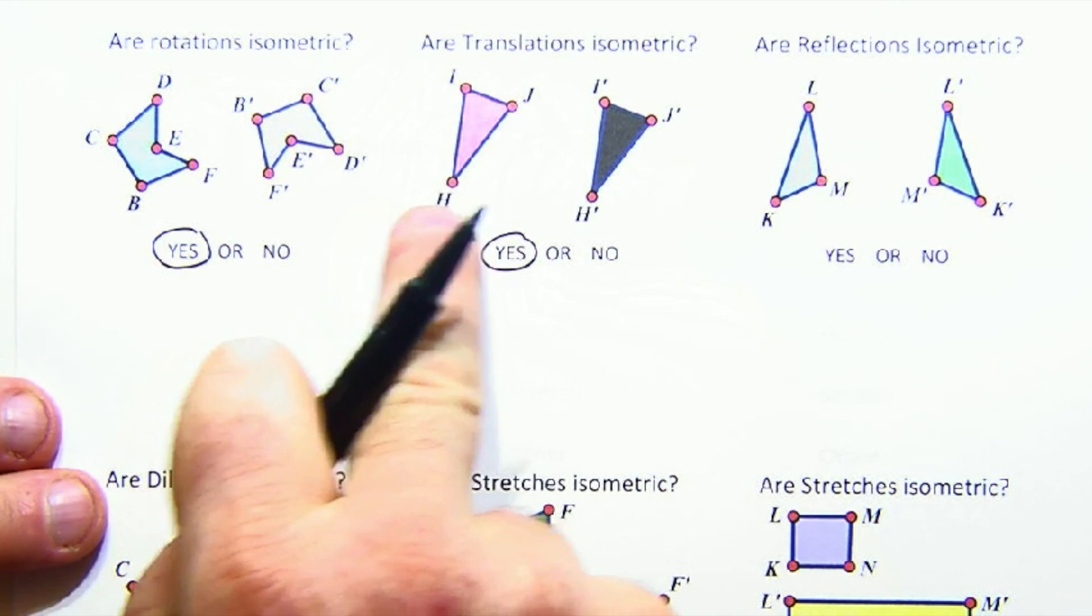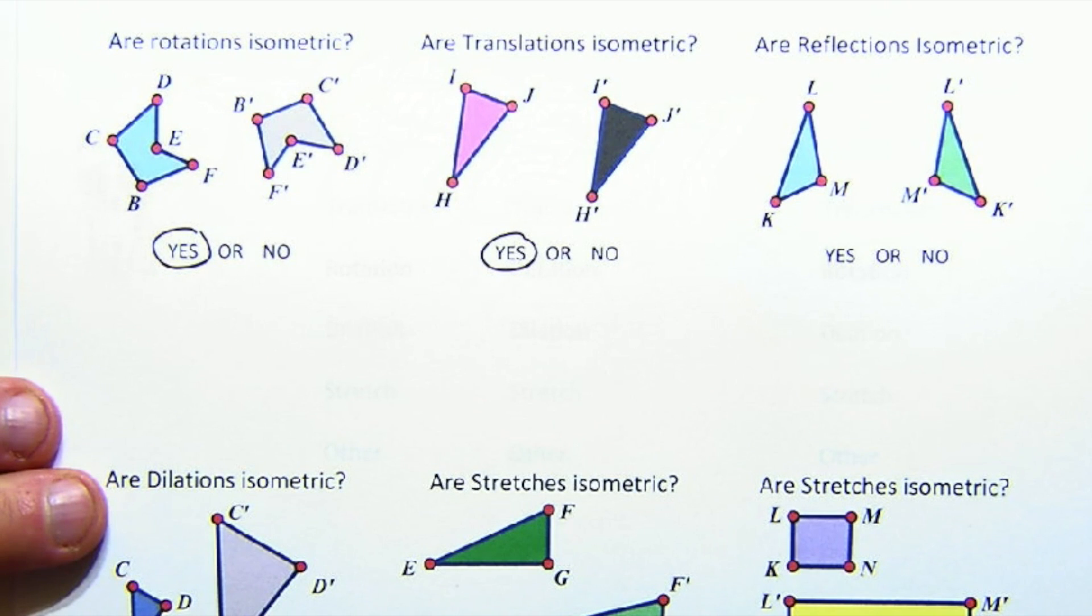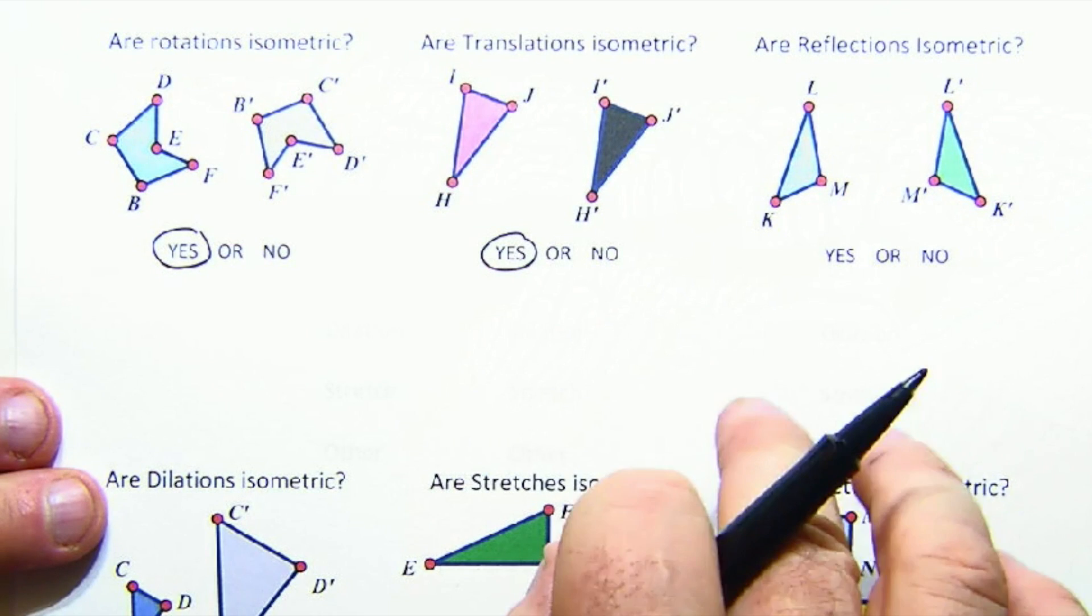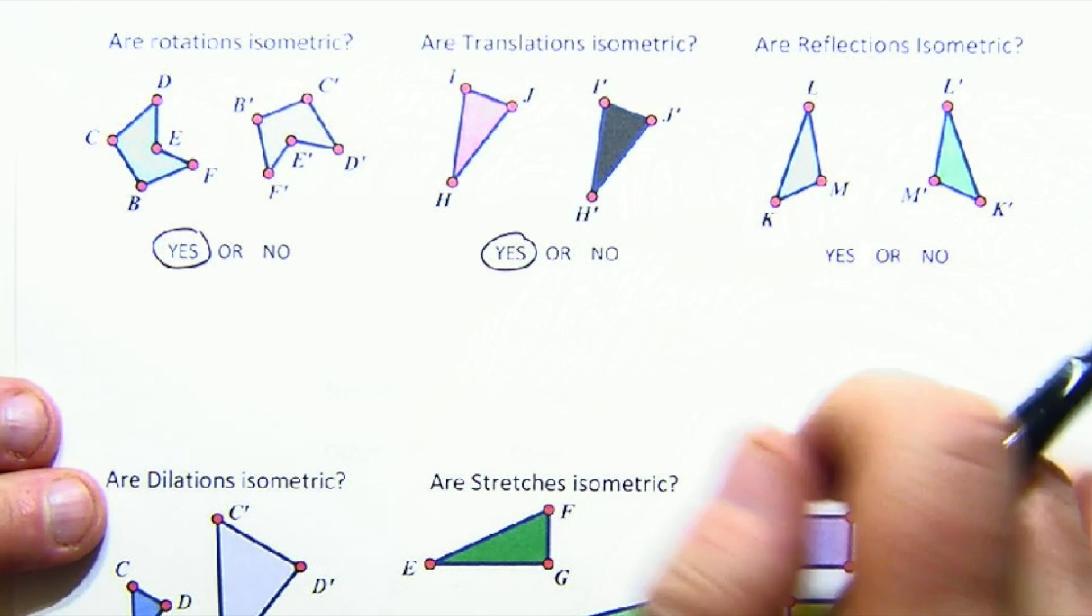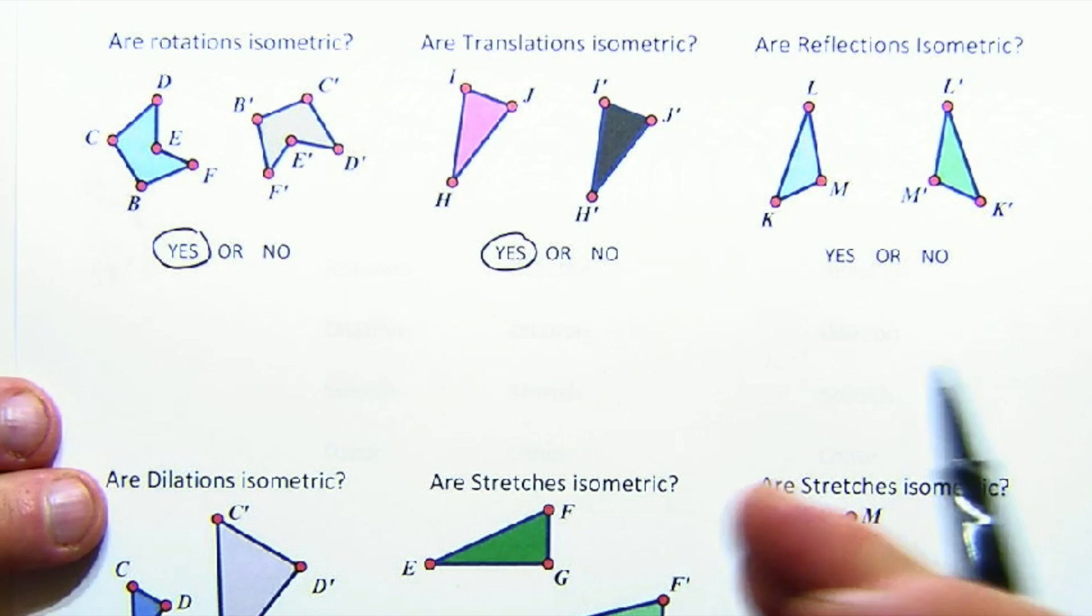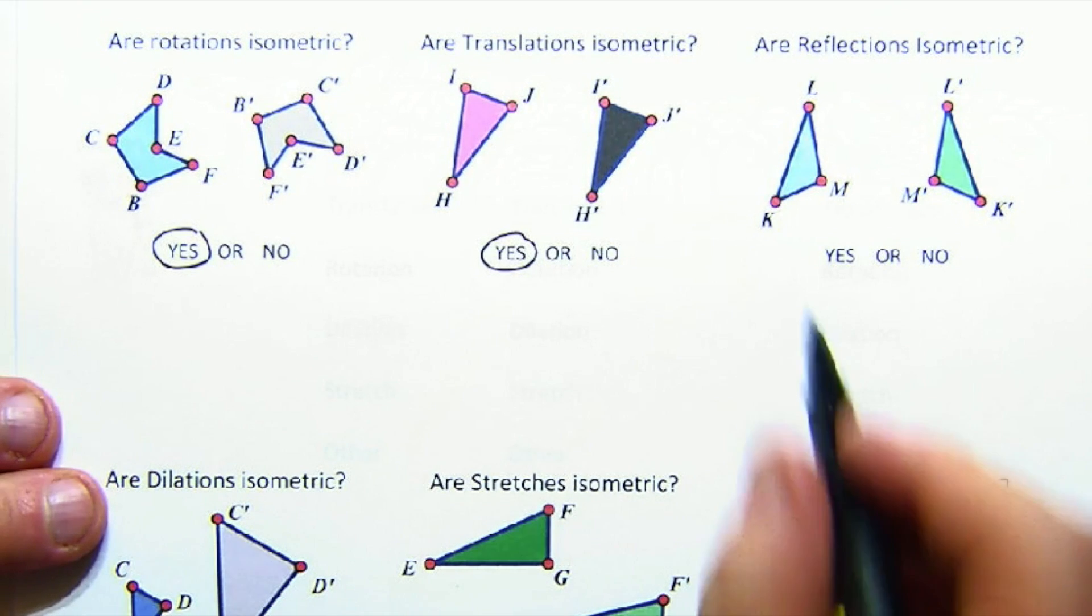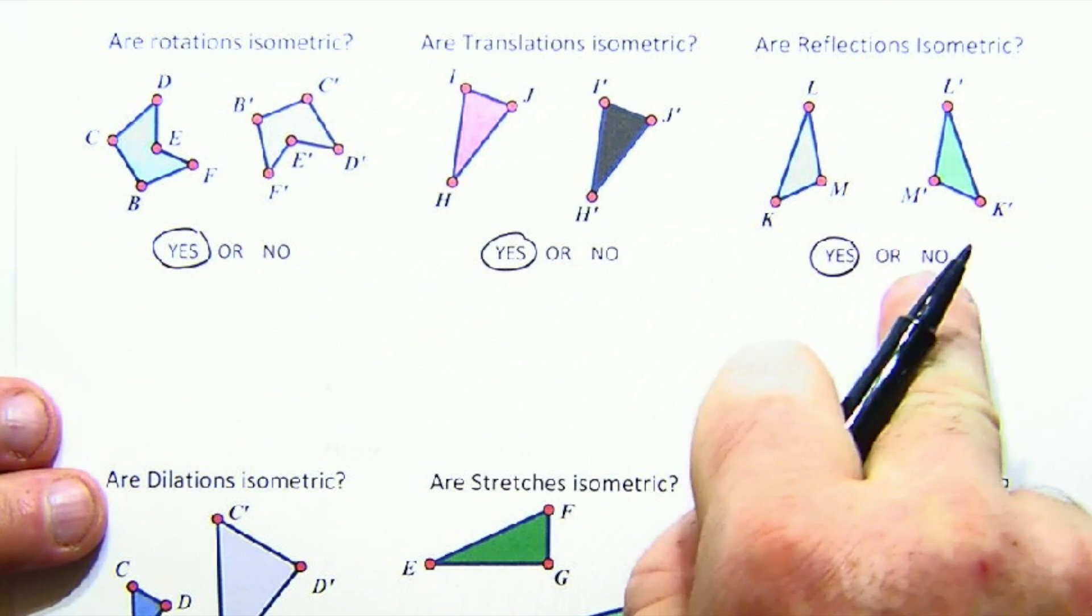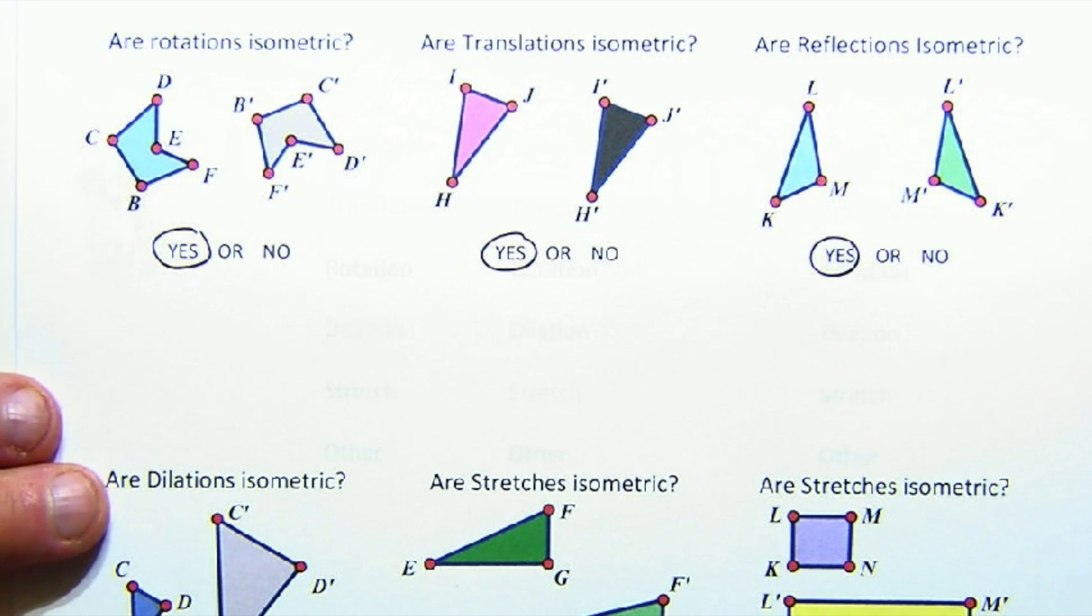A reflection, while it does alter the look of the shape, it does not alter the shape itself. Notice the distances all still match. It's the same shape just in a reflected manner, so it is also isometric. These three: rotation, translation, reflection are isometric transformations.